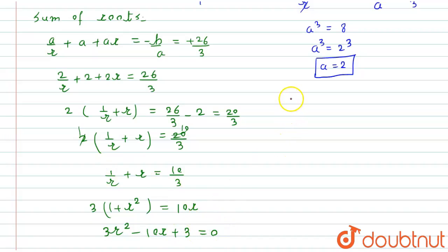Now this equation can be broken like 3r² - 9r - r + 3 equals 0. If we take 3r as common, it remains r - 3. Minus 1 common, so it remains r - 3 equals 0. r - 3 will be common, so in another bracket we will get